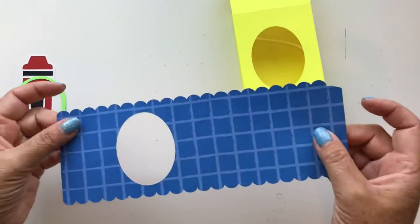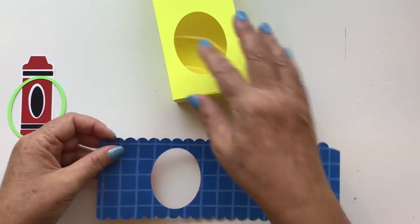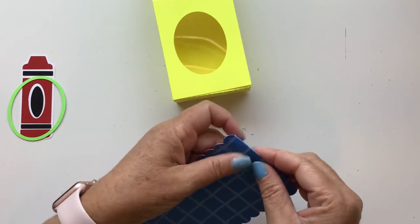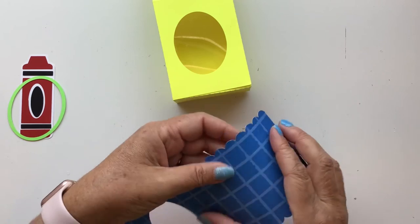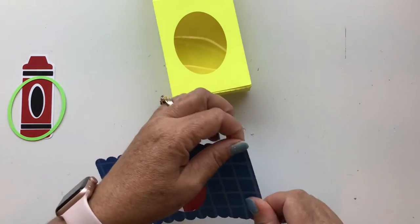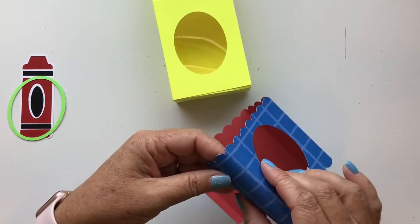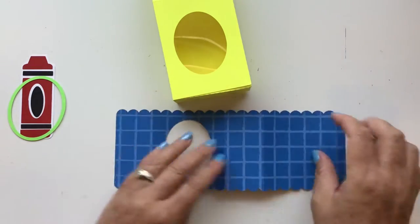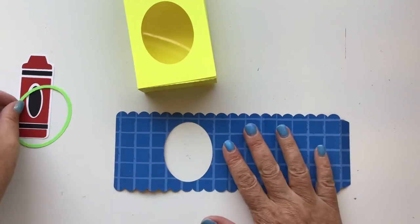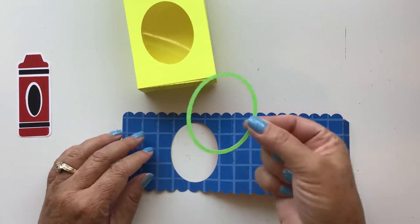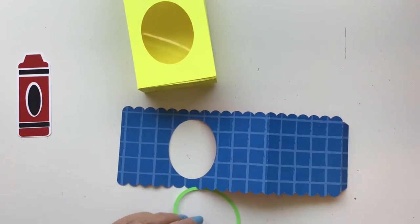So next we're going to take our band and we're going to score it on those score lines. But before we adhere it to our box, I want to go ahead and place my frame on the belly band.